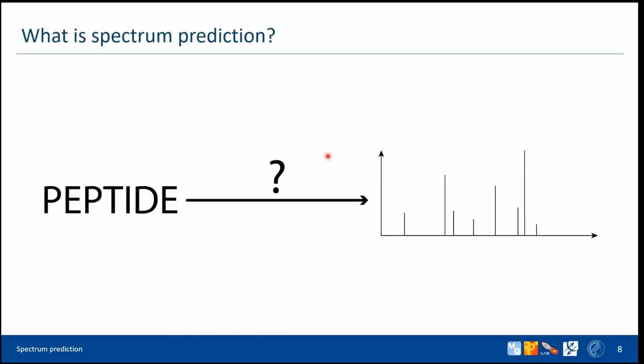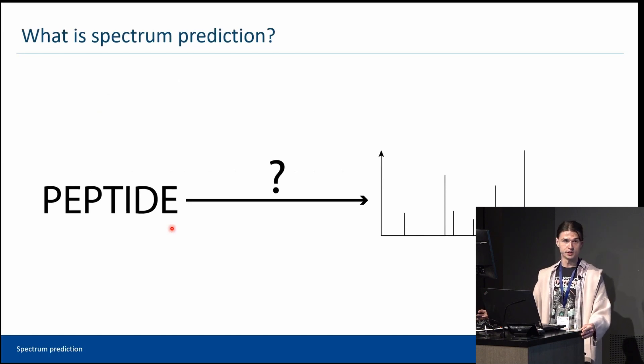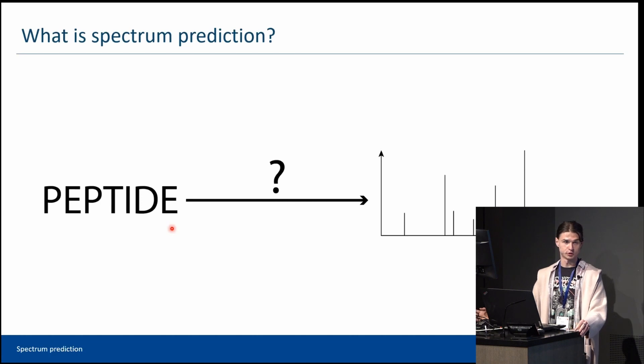And thus we come to spectrum prediction. What is spectrum prediction? Here we mean reconstruction of the peptide fragmentation pattern from its sequence. People have been trying to do it for nearly 20 years, but only recently have developments in machine learning enabled spectrum prediction with near-experimental accuracy. This lecture will be about these methods and their application in shotgun proteomics.